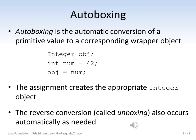Last but certainly not least is the concept of auto boxing. Auto boxing is the automatic conversion of a primitive value to its corresponding wrapper object. Here we have three simple lines of code: we declare an Integer wrapper object called obj, declare a primitive int named num assigned the value 42, and by assigning num to obj we automatically convert the primitive value to the wrapper object data type. Then we can use all of the methods associated with that wrapper object.